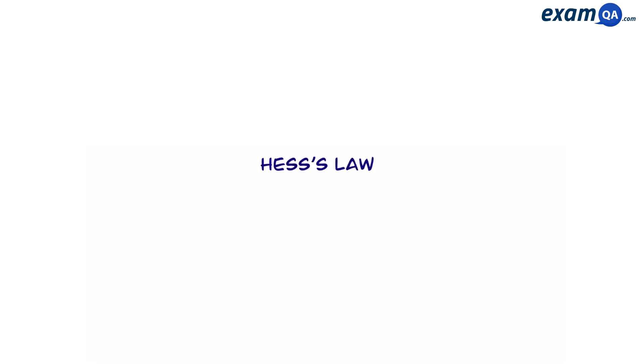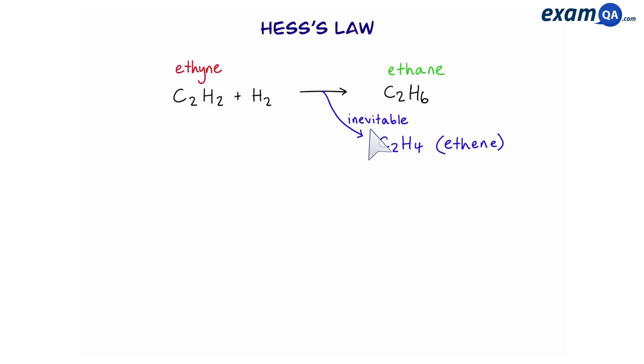In this video, we're going to be talking about Hess's law. Ethane reacts with hydrogen to form ethane. We're not too worried about balancing it here, but the main question is: if I was to react ethane with hydrogen, would ethane be the only product I produce? Unfortunately, in this case, we also produce some ethene, and this is inevitable in such a situation.